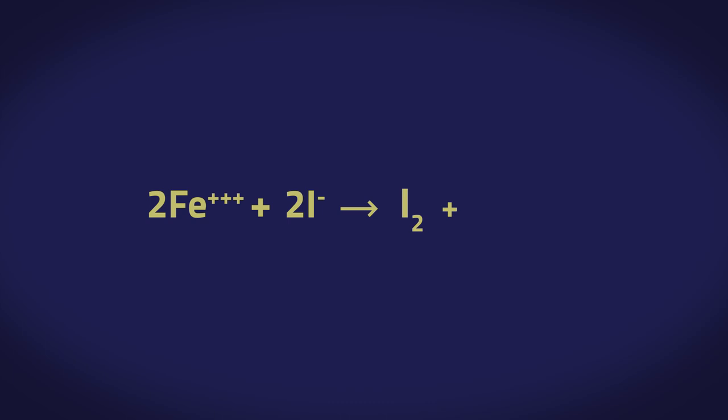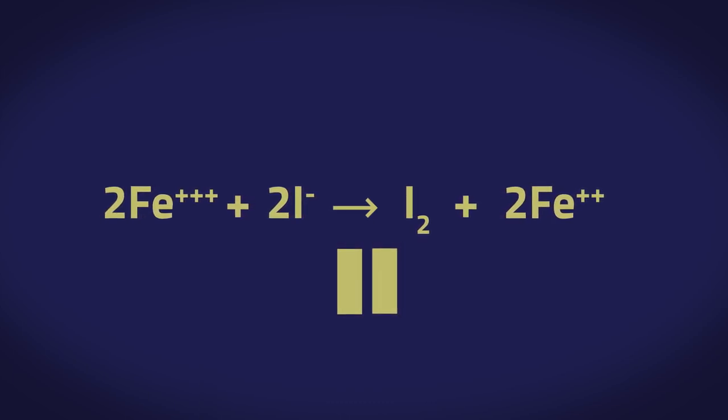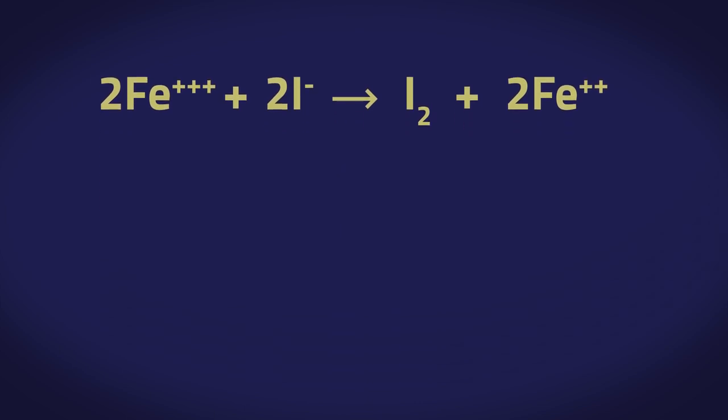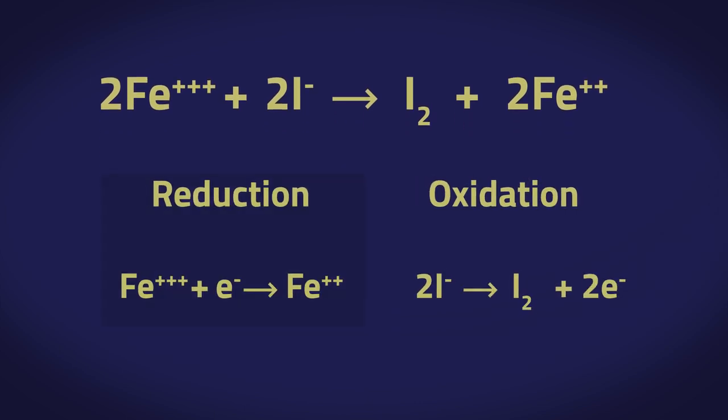Here is another redox reaction where the iron chloride oxidizes iodide ions to iodine solid. See if you can write the two half equations. Pause the video and work out the answer. Did you get it right? The iron is reduced and so gains an electron. The iodide ions are oxidized and so lose electrons to form iodine.